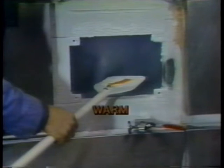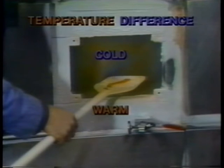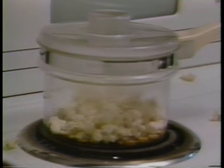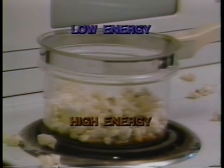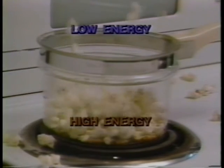Heat will move from warm areas to cold, from areas of high energy to low, and it's moved by temperature difference. Temperature difference is what acts like a force to move heat in a thermal system. Even popcorn kernels will move from areas of high energy to low if they're able. This is how heat moves from warm areas to cold in a thermal system.